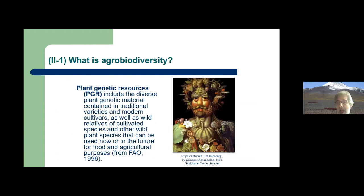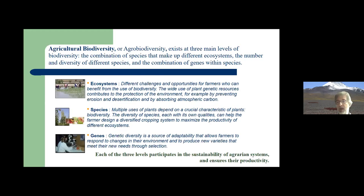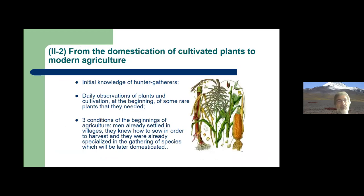When talking about agrobiodiversity, we often focus on plant genetic resources, reducing agrobiodiversity to this issue, but plant genetic resources include only the diverse plant genetic material containing traditional varieties and modern cultivars as well as wild relatives that can be used for food and agriculture. Agricultural biodiversity is important at all three levels: ecosystem level, species level, and gene level, and each level participates in the sustainability and productivity of agricultural systems. The process of agrobiodiversity comes from the domestication of cultivated plants to modern agriculture.